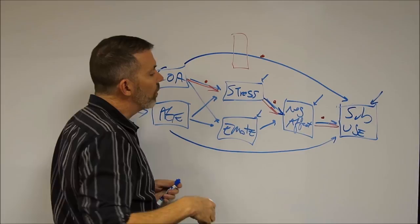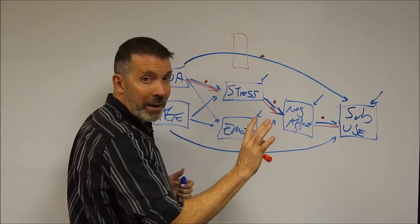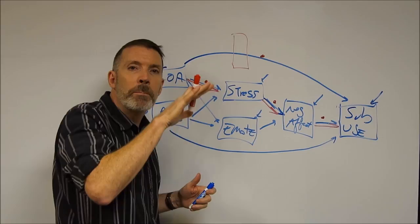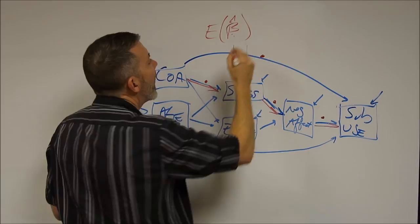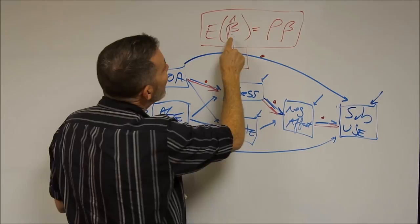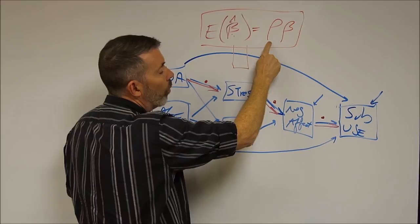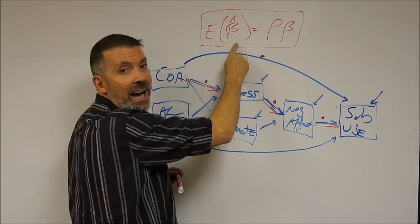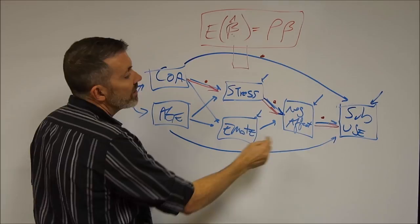It can be shown — and Bollen in his 1989 book really nicely shows this — that unreliability in a model like this, whether it be in a regression model or in a path analysis, attenuates the regression coefficients, meaning it makes them smaller. The expected value of our sample estimate is equal to the population reliability ρ multiplied by the population regression coefficient β. The only way the expected value of β-hat can equal β is when ρ equals 1.0. When ρ is less than 1.0, this naturally begins to go down — so if ρ is 0.9, our expected value is 0.9 times β; if 0.8, then 0.8 times β. That's that attenuation, and these regression coefficients are going to be smaller than they otherwise should be.